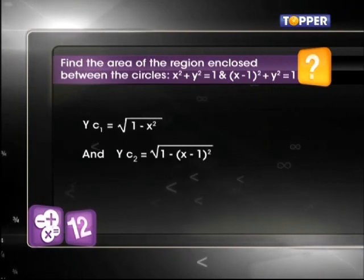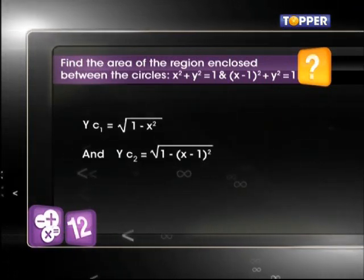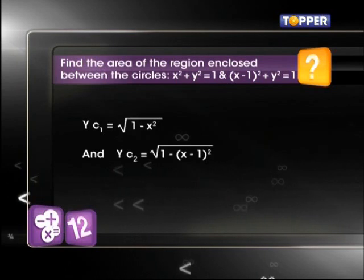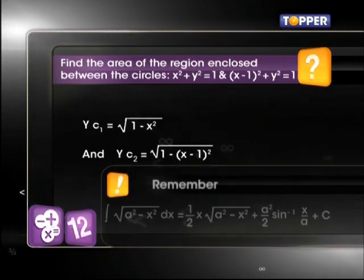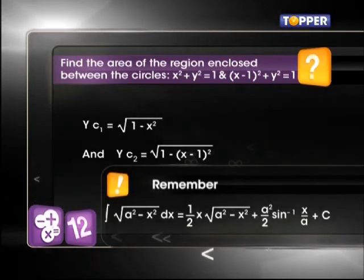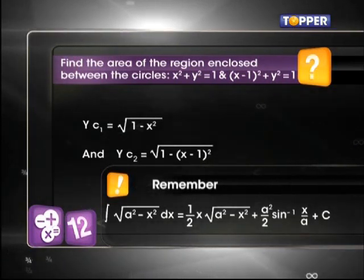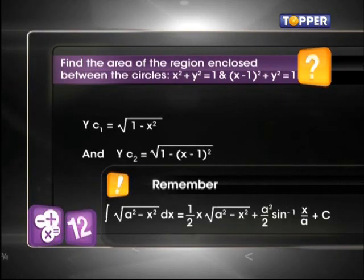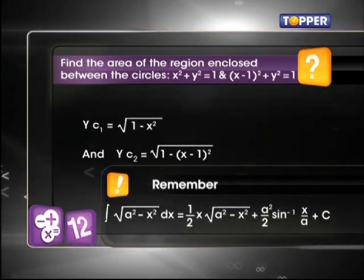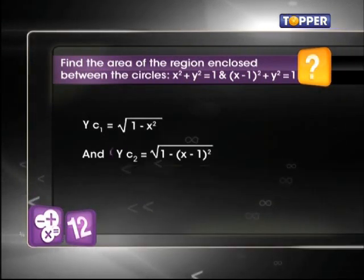Also, we find the equations in the form of y. Then, the first equation can be written as yc1 = √(1-x²) and yc2 = √[1-(x-1)²].